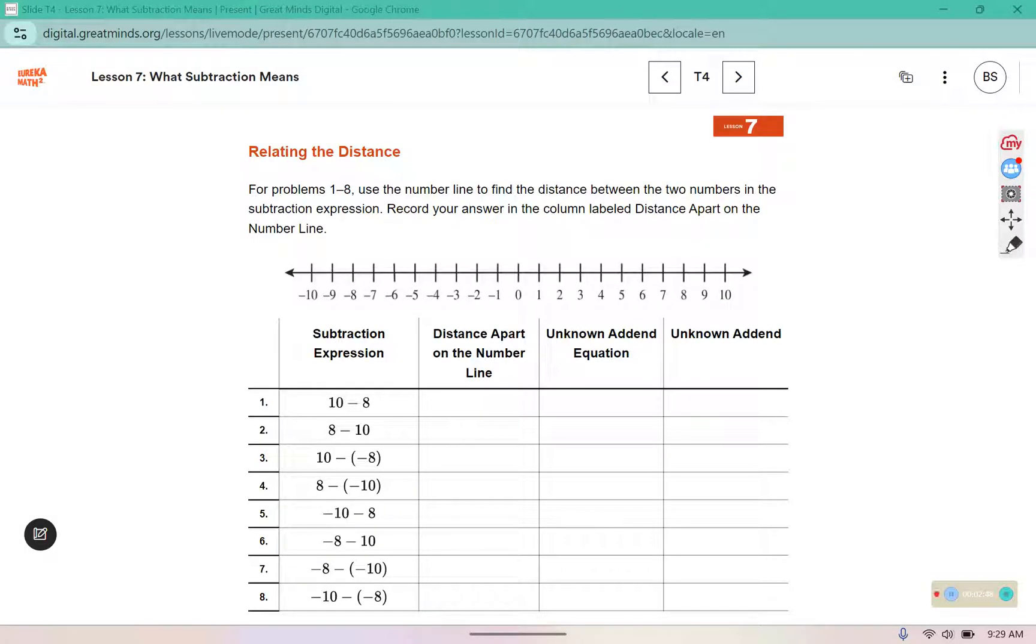For problems 1 through 8, use the number line to find the distance between the two numbers in the subtraction expression, and record your answer in the column labeled distance apart on the number line. Remember, distance is always a positive value. We wouldn't say that they're negative 2 feet apart, we would say they're 2 feet apart. So for 10 and 8, we're going to place both of those numbers on the number line, and we can see that they are 2 apart from each other.